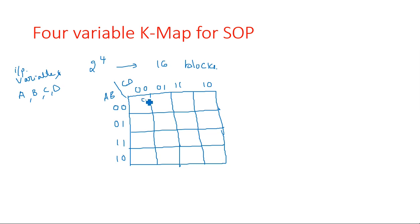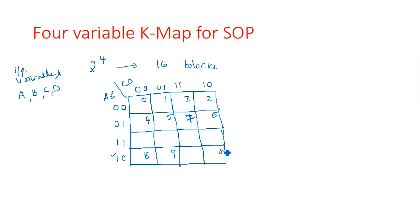The block numbering goes: 0, 1, 2, 3 for the first row; then 4, 5, 6, 7; then 8, 9, 10, 11 — note that after 11 the Gray code continues as 10, so 1000 is block 8. Then 12, 13, 14, and 15 (all four 1s). So from 0 to 15 we have 16 blocks total.